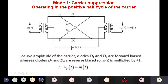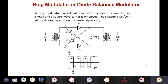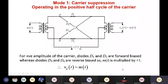During the positive half cycle of the carrier, diodes D1 and D2 are forward biased while D3 and D4 are reverse biased. So m(t) is multiplied by plus one — the carrier amplitude is positive during the positive half. The output voltage V0 equals m(t).